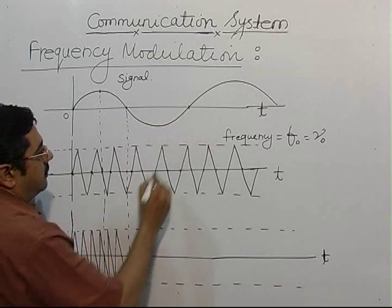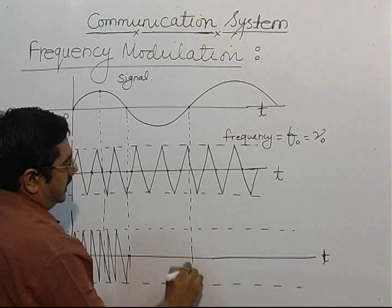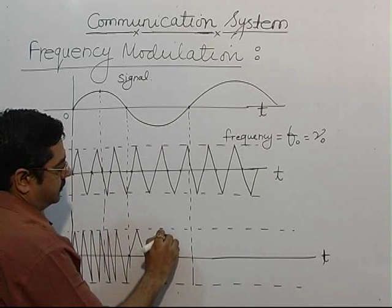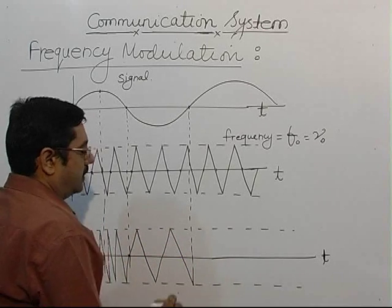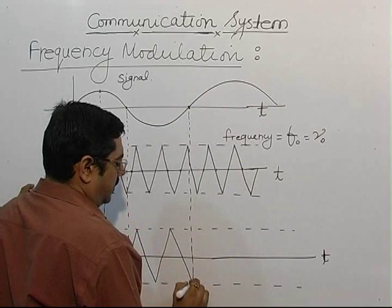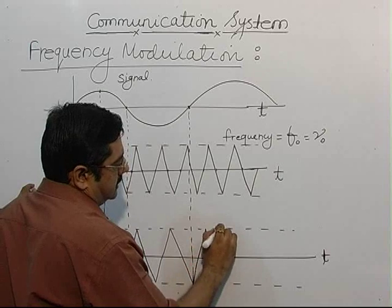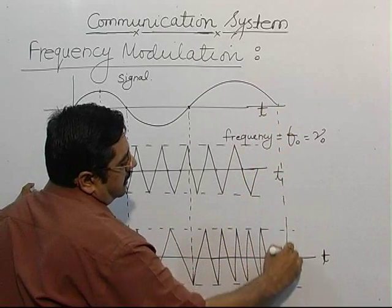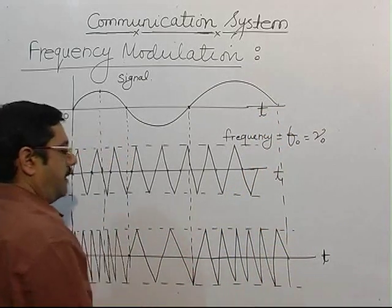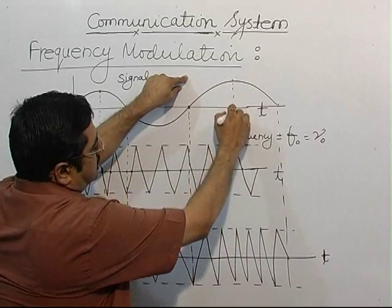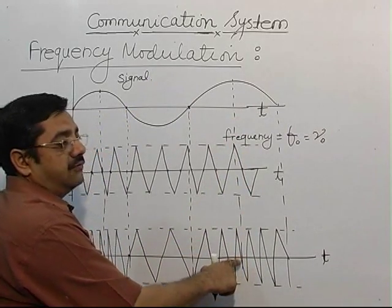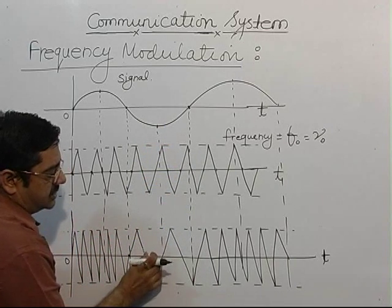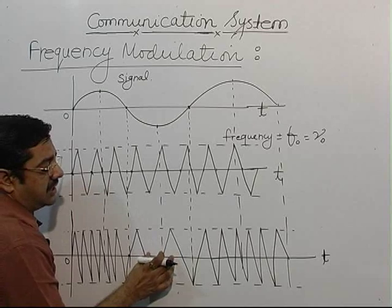In the negative direction, the frequency of the carrier wave decreases — meaning the waves will be far apart. Then when the positive cycle comes again, the frequency of the carrier wave increases. When the signal is at maximum, the frequency is maximum; when the signal is at minimum, the frequency — that is, the number of cycles per second — is minimum.